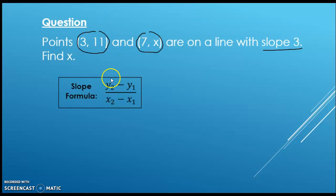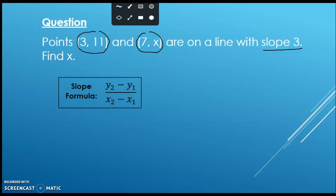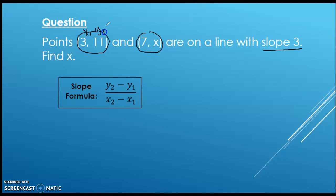Just as a reminder, the slope formula is y2 minus y1 — subtracting y's on top — over x2 minus x1 — subtracting your x's on the bottom. Let's label what we have: x1, y1, and then x2, y2, and the slope is going to be your m value of three.